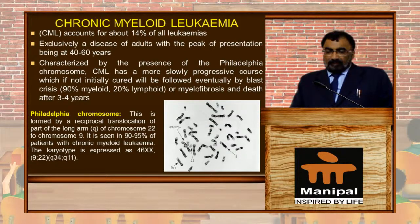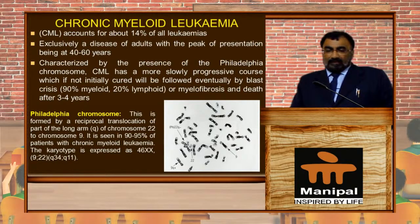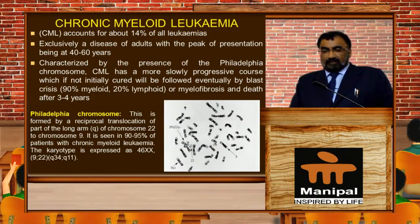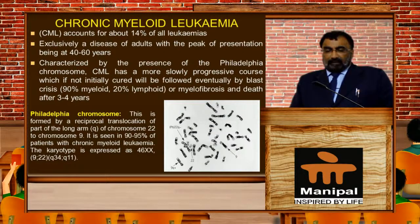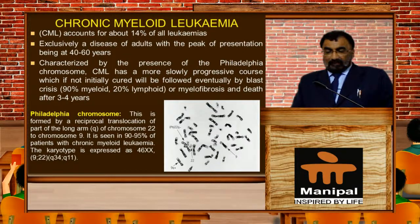The characteristic feature is the Philadelphia chromosome. Chronic myeloid leukemia has a more slowly progressive course which, if not initially cured, will eventually be followed by blast cell crisis — in which 90% are myeloid cells and 20% are lymphoid cells — or myelofibrosis and death in 3 to 4 years.